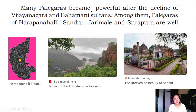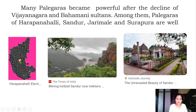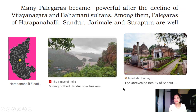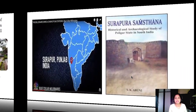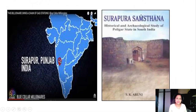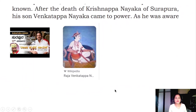After the decline of all these dynasties, many Palegaras became powerful. Among them were the Palegaras of Harpanahalli and Sandur. Sandur is a very beautiful place you can visit, with many temples including the Kartikeya temple, and mining also goes on there. Jarimale and Surpur are also notable. Surpur is situated at the boundary of Karnataka and Maharashtra - the Surpur Samsthana - which was ruled by Palegaras at that time.